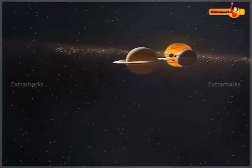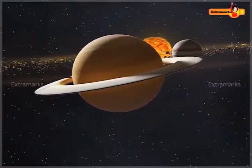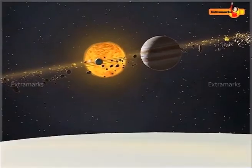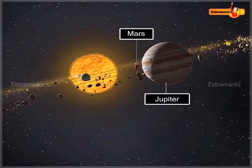Asteroids are large pieces of rocks and metals mainly found in the asteroid belt revolving around the Sun between the orbits of Mars and Jupiter.